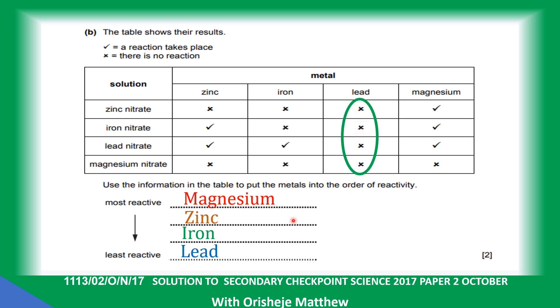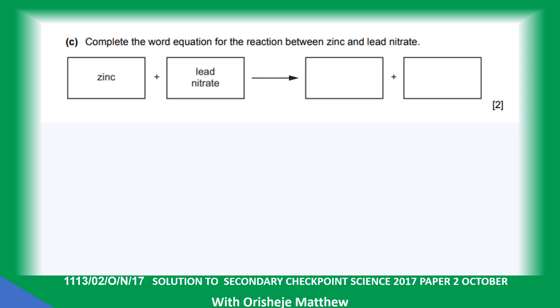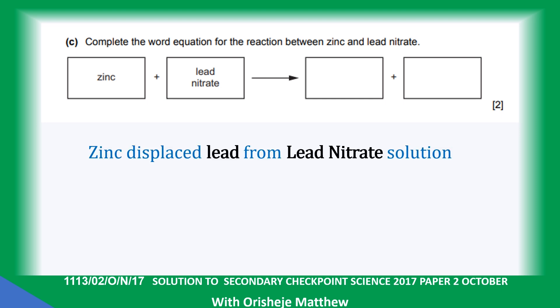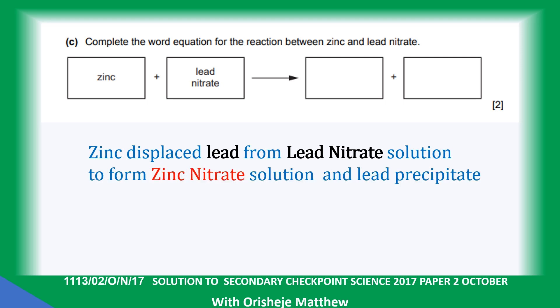Complete the word equation for the reaction between zinc and lead nitrate. Zinc is higher than lead in reactivity, so zinc is going to displace lead from nitrate to form zinc nitrate solution and lead precipitate — that is the word equation.